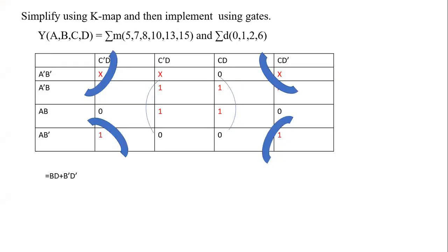Today we discussed how don't care conditions are used in K-maps for SOP. Remember: don't care condition positions are different from SOP positions. First place the ones at the given positions, then place the don't care crosses. Look for maximum grouping — prefer octet first, then quad, then pair — even if a pair is easily ready. The purpose of K-map as a reduction method is to reduce the number of variables, leading to simpler circuit diagrams.